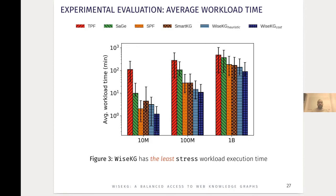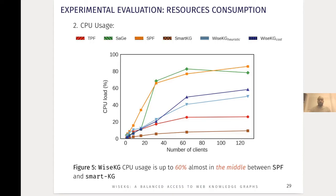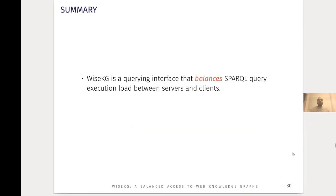YSKG also has the least stress workload execution time — it is up to four times faster than SPF and SmartKG, and up to an order of magnitude faster than Sage and TPF on WatDiv 1 billion with 128 concurrent clients. In terms of resource consumption, YSKG transfers on average 5.5 MB per query, while SPF transfers 7 MB and SmartKG transfers on average 13 MB over WatDiv 100 million. YSKG uses up to 60% of the CPU, placing it almost in the middle between SPF, which evaluates all star patterns on the server side, and SmartKG, which evaluates all star patterns on the client side.